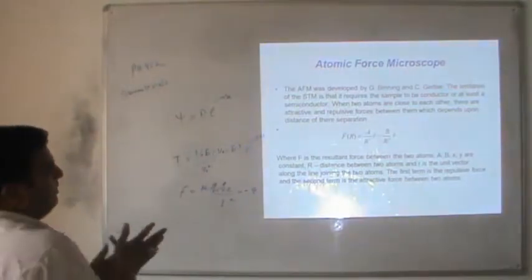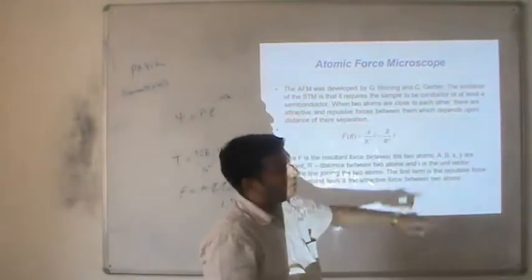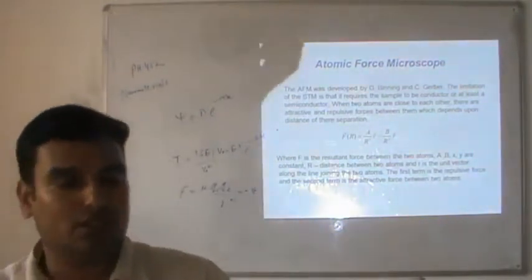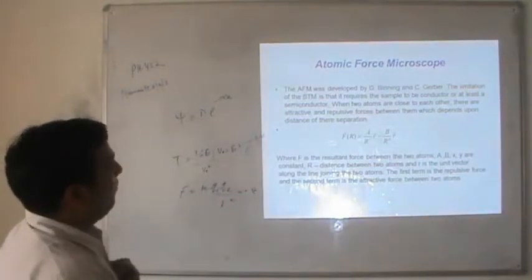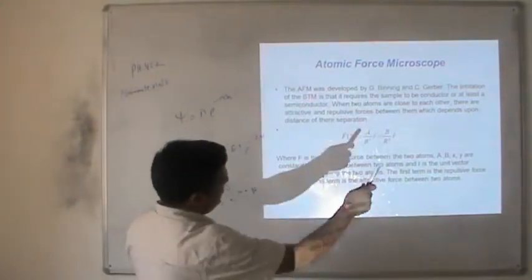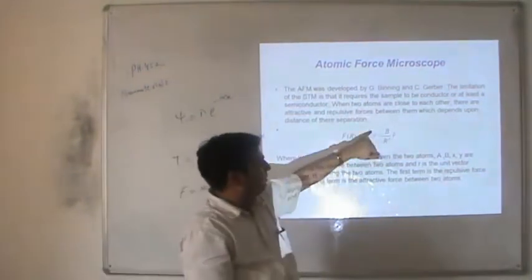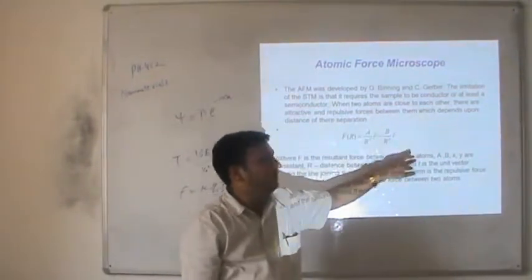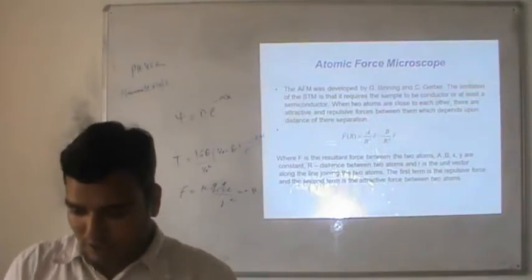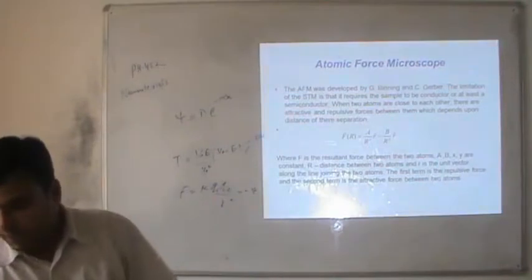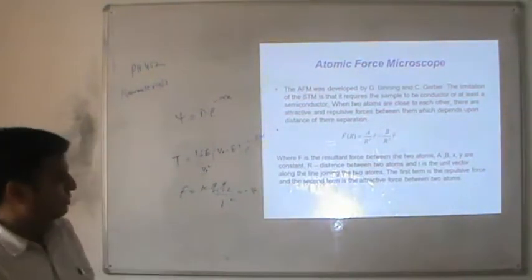The principle of AFM: looking at the force-distance curve, when the force is attractive we are in non-contact mode, and when force is repulsive we are in contact mode. The energy U and force F are related by F = -dU/dz. The force is attractive at large distances and becomes highly repulsive at short distances when the electron clouds of tip and sample overlap — this is electrostatic repulsion and the device is then known as electrostatic force microscopy or electric force microscopy.